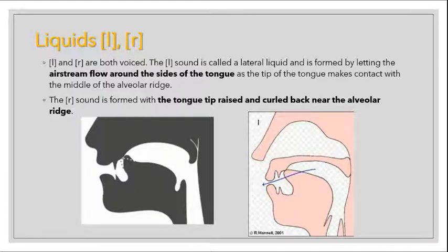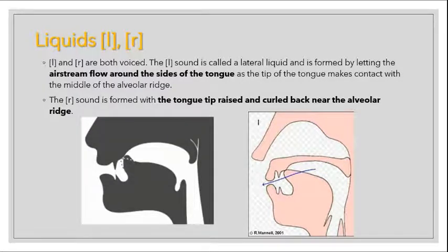The R sound is voiced. The R sound is formed with the tongue tip raised and curled back near the alveolar ridge. The difference between L and R is that with L, the sides of the tongue allow air to flow through, whereas with R the airstream is directed differently through the center.